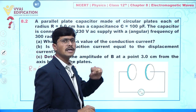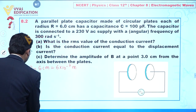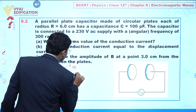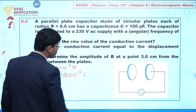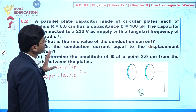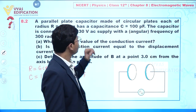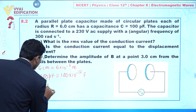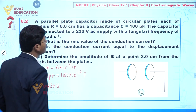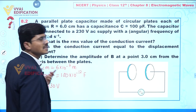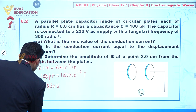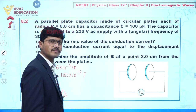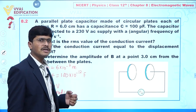It has a capacitance of 100 picofarad, so we can write capacitance = 100 picofarad, or 100 × 10⁻¹² farad. The capacitor is connected to a 230 volt AC supply, which means V_RMS = 230 volt, having an angular frequency of 300 radian per second, so omega = 300 rad/s.